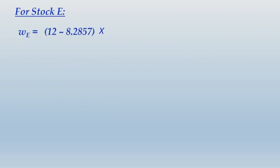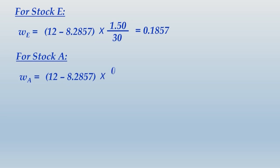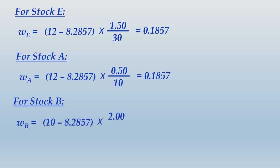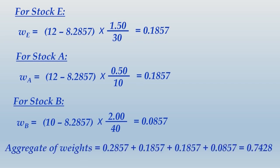Proportions are computed for stock E, then stock A, and then stock B. The four stocks selected for the portfolio all have their proportions determined. The total of all these weights comes to 0.7428, but the weights must always total 1. Since 0.7428 is not equal to 1, an adjustment is needed. Therefore, we proceed to Step 5 to refine the weights.